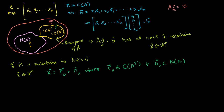So let's say that x is a solution to Ax equals B, which means x is a member of Rn. We can represent it as x equals r0 plus n0, where r0 is a member of our row space and n0 is a member of our null space. Solving for r0, if we subtract n0 from both sides, we get r0 equals x minus n0.